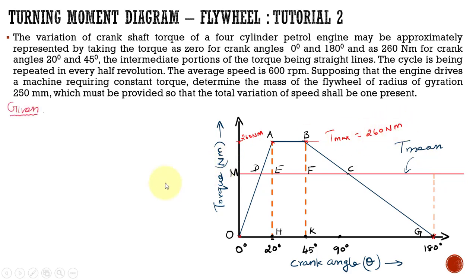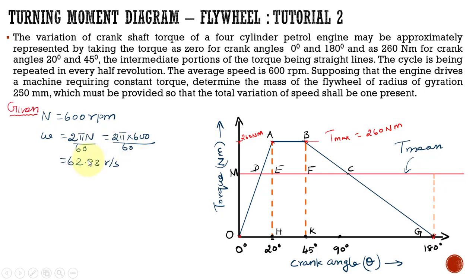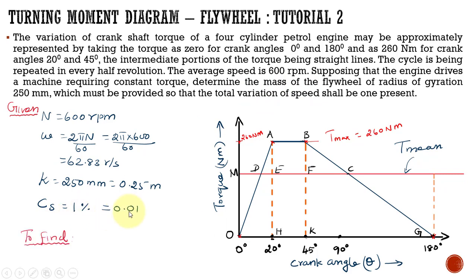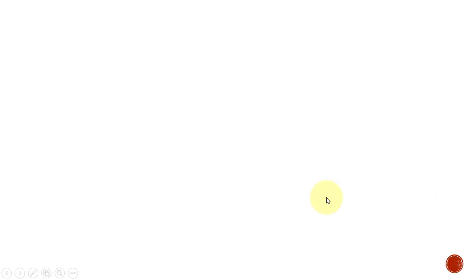The other given data: speed is 600 rpm, from which angular speed omega = 2π N/60 = 62.83 rad/s. The radius of gyration is 250 mm, which converts to 0.25 m. The total variation of speed is 1%, which converts to Cs = 0.01. We are going to calculate the mass of the flywheel.